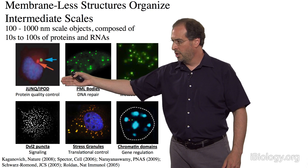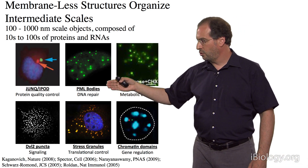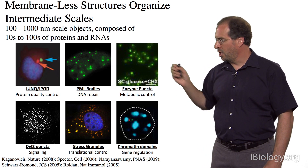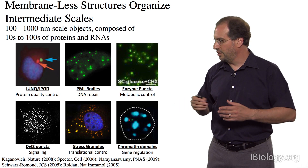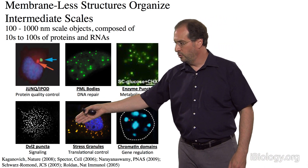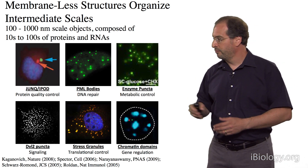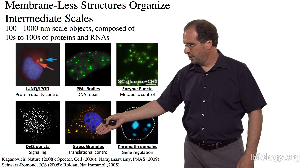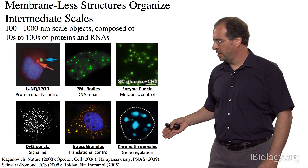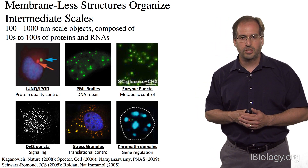For example, there are some structures — the junk and the iPod structures — that are involved in protein quality control. There are structures in the nucleus, called PML nuclear bodies, that are involved in DNA repair. There are puncta of various metabolic enzymes observed in yeast and higher eukaryotes, believed to be involved in controlling metabolism. There are puncta of numerous signaling molecules, such as the disheveled protein, involved in mediating signaling activities. There are RNA granules of various flavors, such as stress granules, which are involved in translational control.